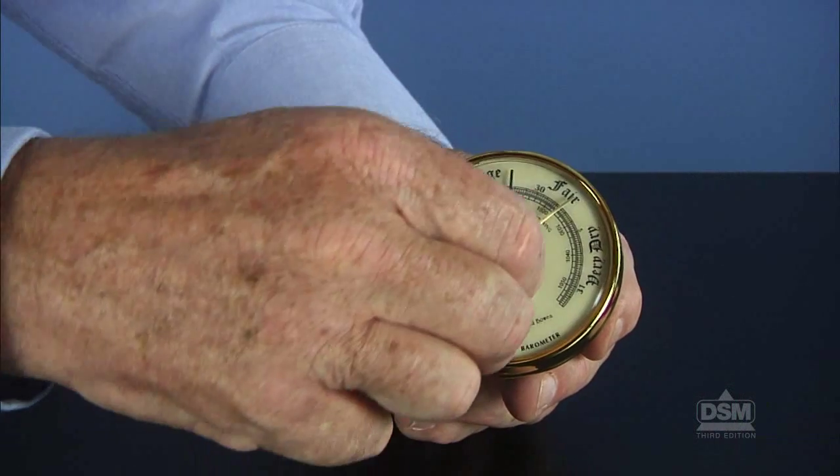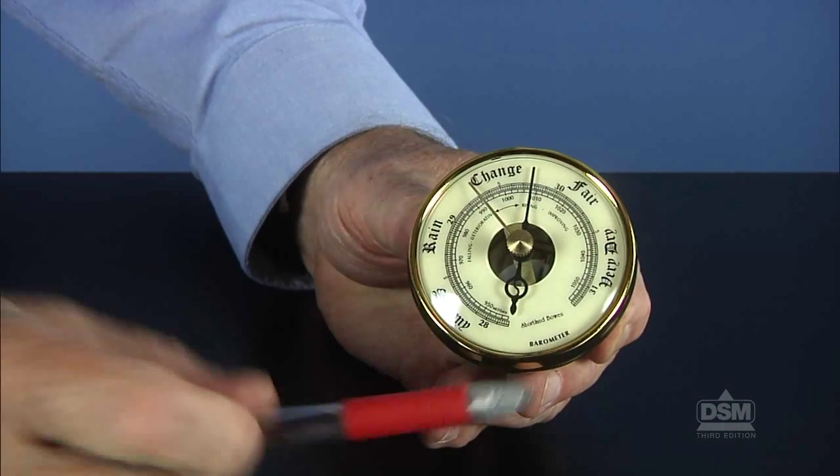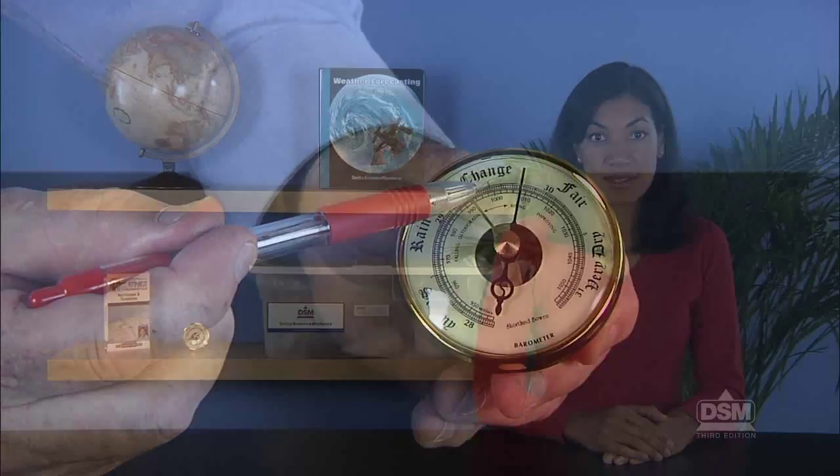Explain that most barometers have another pointer also. This handset pointer is attached to the knob on the barometer cover and can be moved by twisting the knob. Positioning this handset pointer to the same position as the indicator pointer is a great way to mark the position of the indicator pointer.